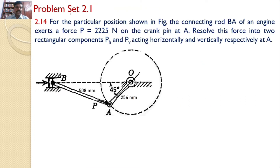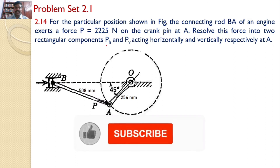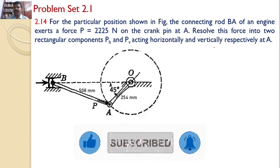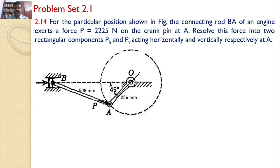In this tutorial, we will solve problem set 2.1, problem number 2.14. For the particular position shown in the figure, the connecting rod BA of an engine exerts a force P equal to 22.5 N on the crank pin at A. Resolve this force into two rectangular components PH and PV acting horizontally and vertically respectively at A.